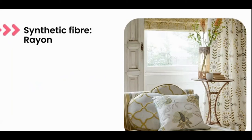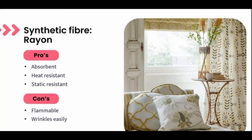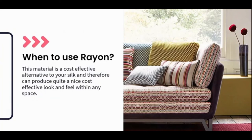Next we're going to look at rayon — a synthetic fiber manufactured mainly from the pulp of wood cellulose fiber. Depending on the process, it can serve as a less expensive alternative to silk. Pros: absorbent, fairly heat-resistant, and excellent static resistance. Cons: flammable and wrinkles really easily. This material is a cost-effective alternative to silk and can produce a nice look and feel in any interior space. The material must be treated for drapery or upholstery applications and has suggested limitations on traffic and location.